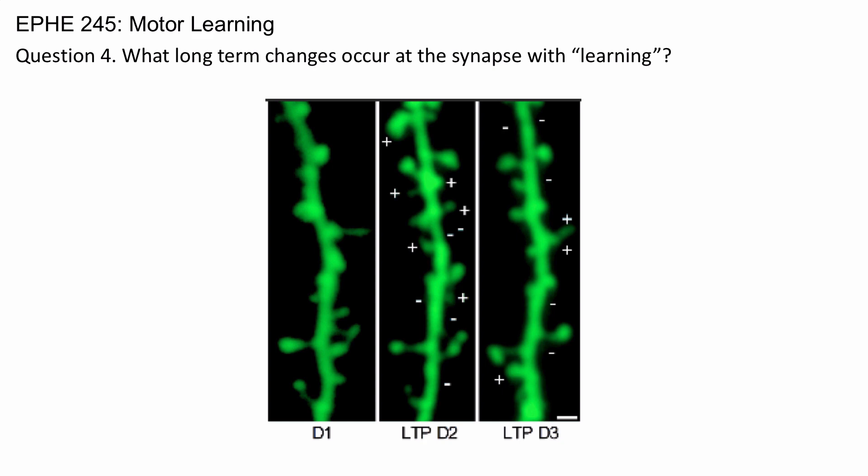One way to think of this is new connections are being formed, which are essential for producing a skill, and connections that aren't needed for skill production or for the memory are being pruned and taken away.